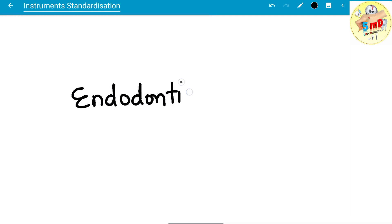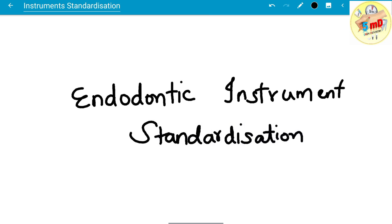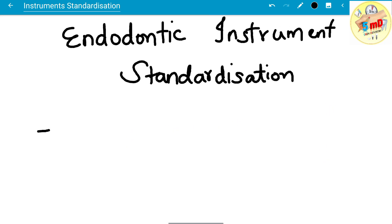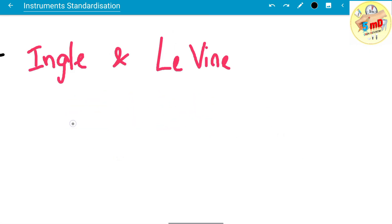In this video we will see about endodontic instrument standardization. Endodontic instruments, namely files, broaches, and rasps, may have had different standardization earlier, but after Ingle and Levine gave some set of standard rules to be followed, it is usually the same for all the instruments.